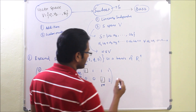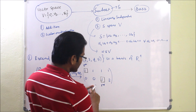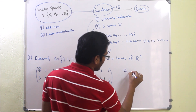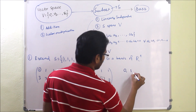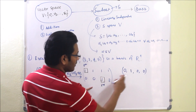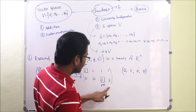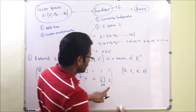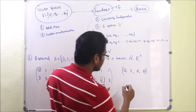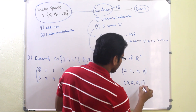The missing pivot positions are 2 and 4, so we construct vectors for those positions. For position 2, we construct the vector (0, 1, 0, 0) — placing 1 at the second entry and 0 elsewhere. For position 4, we place 1 at the fourth entry and 0 at all others, giving the vector (0, 0, 0, 1).